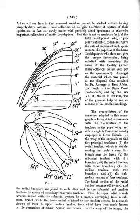Androconia (singular: androconium): in male butterflies, specialized wing scales, often called scent scales, possessing special glands which produce a chemical attractive to females.